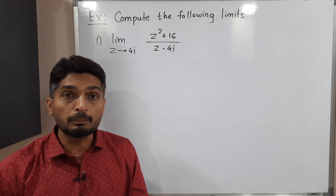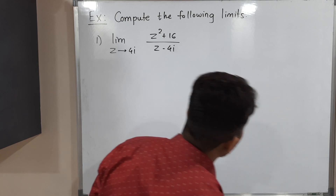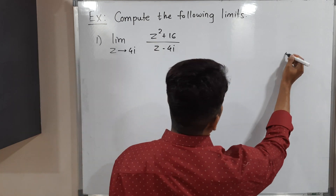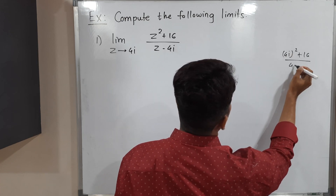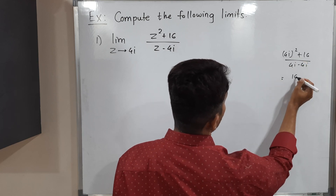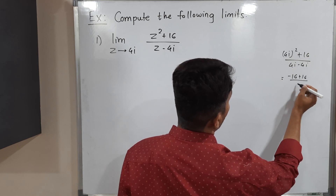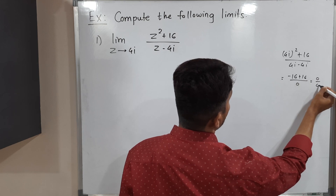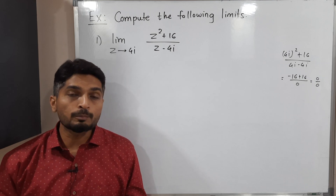Let us see what happens if I directly put z = 4i. Putting z = 4i: (4i)² + 16 over (4i - 4i). So (4i)² = 16 × i² = 16 × (−1) = −16, plus 16 gives 0 in the numerator, and 4i − 4i = 0 in the denominator. So we get 0/0, which is indeterminate form. That's why we cannot put the value directly — we need to simplify first.